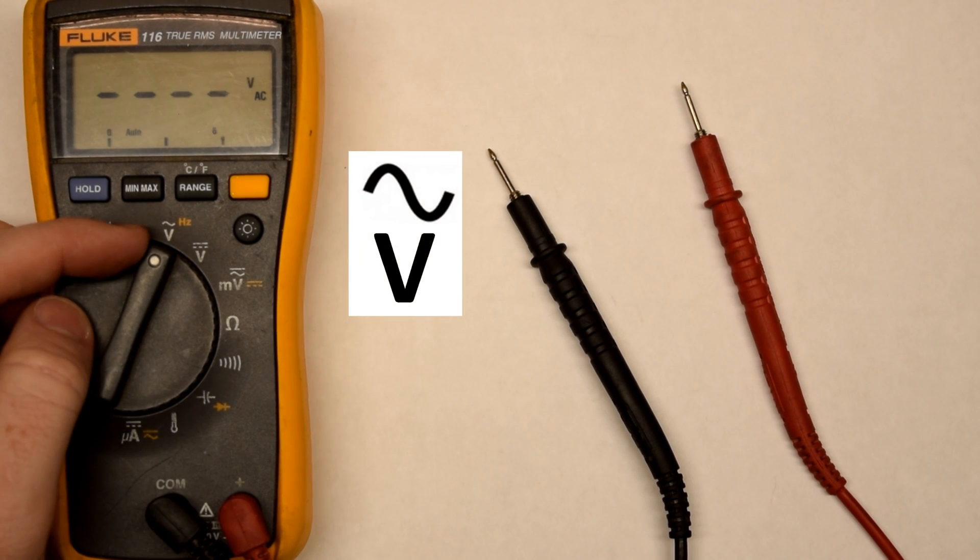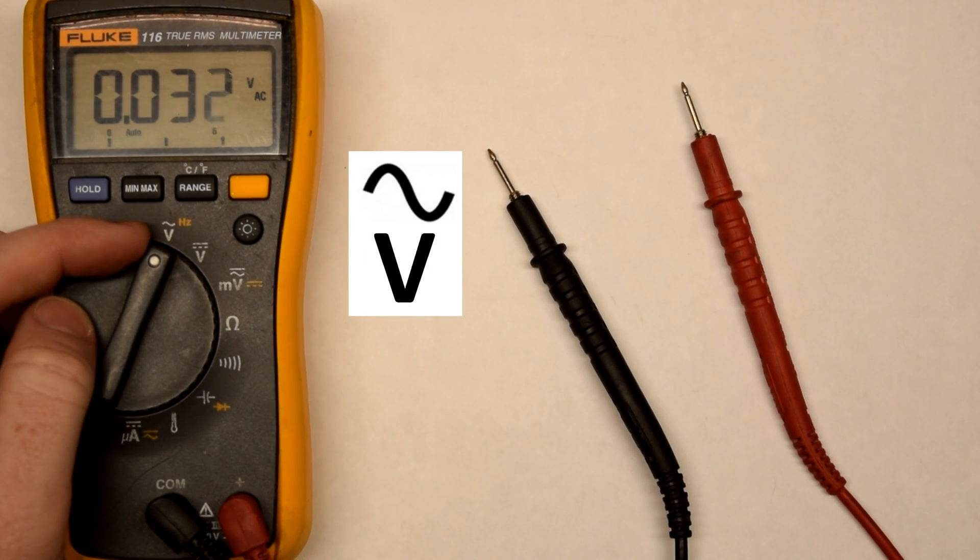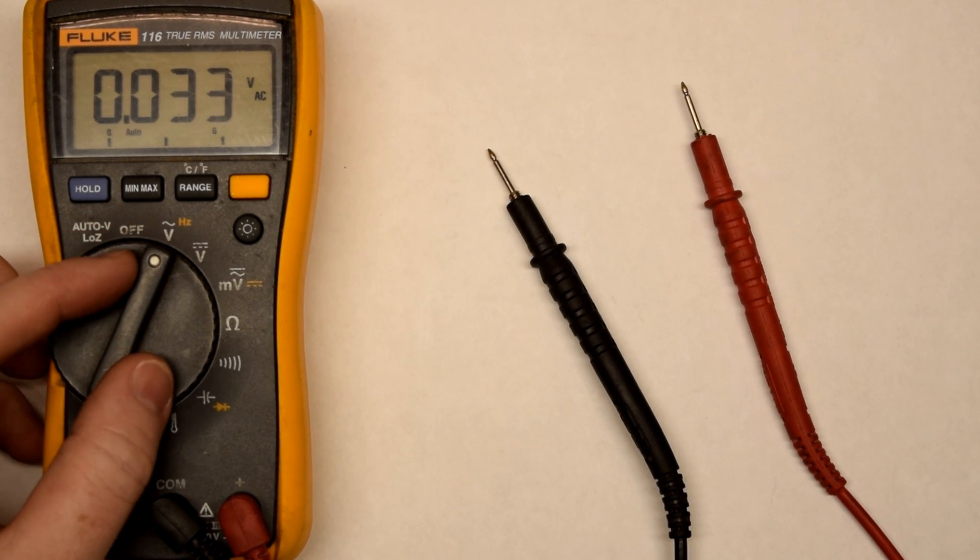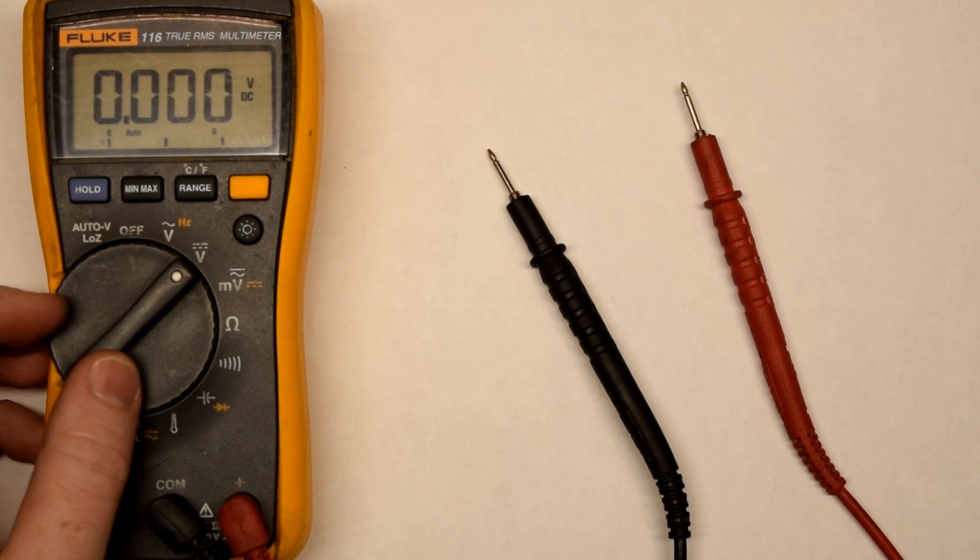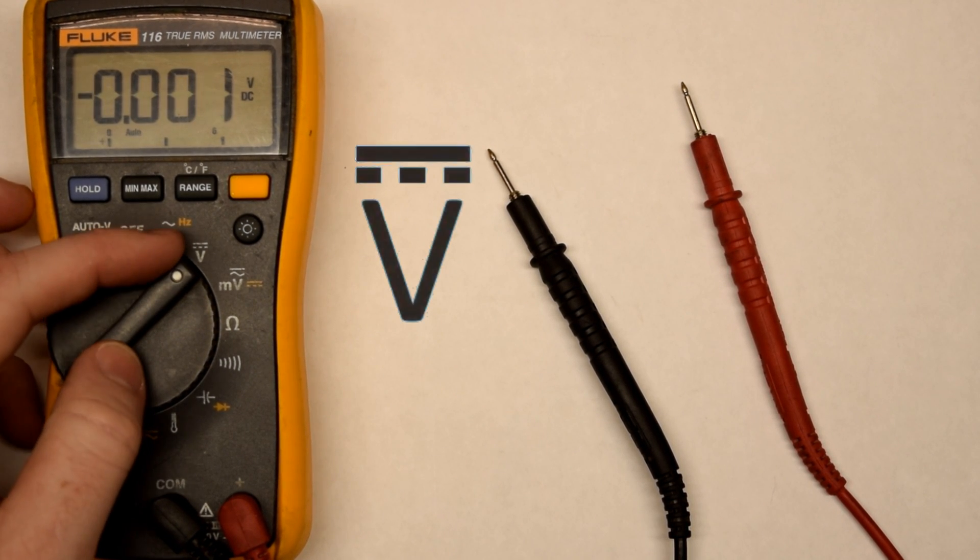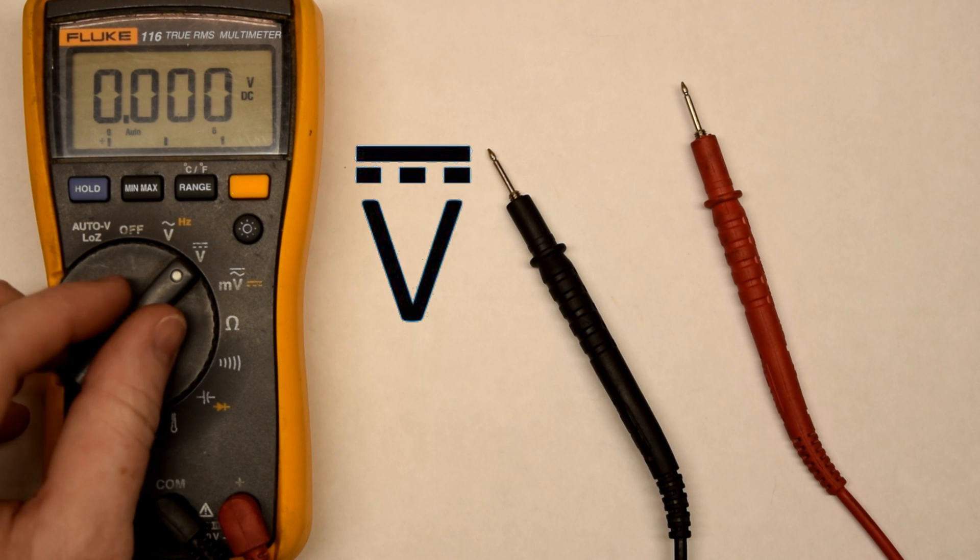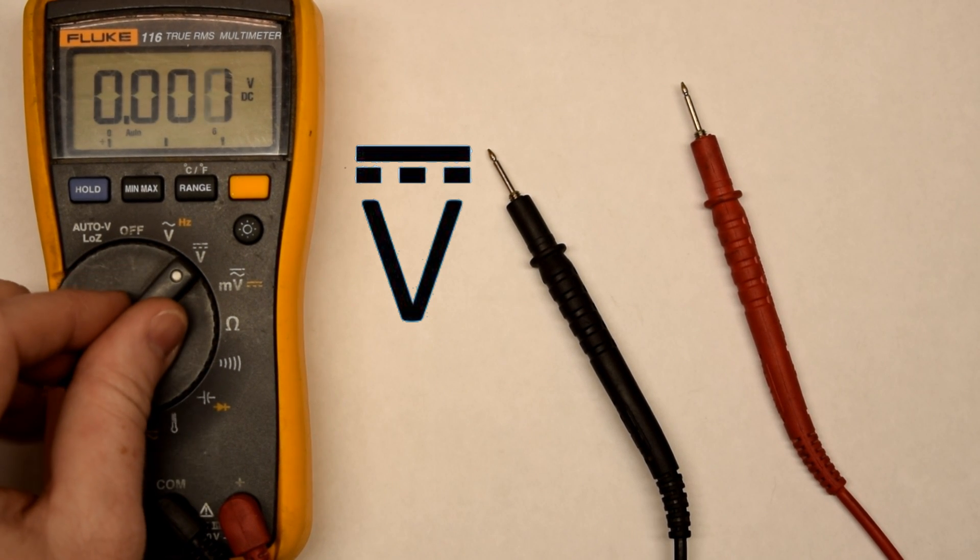Yours should have a V with a wavy line over it. That's going to be your alternating current. So if you're testing wall voltage, that's what you would use. If you're testing more like battery voltage, DC voltage, you'll have a line with dots under it. So you would just need to manually select which one you were testing.